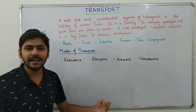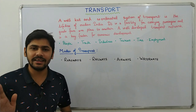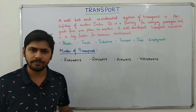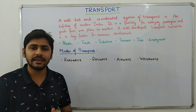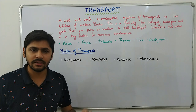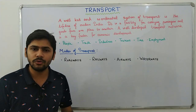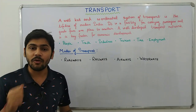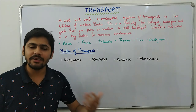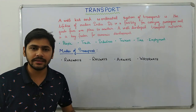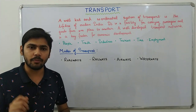Then industries. Industries require raw materials — transport brings those raw materials to the industries. Industries produce finished goods — transport moves those finished goods to our houses. Say you buy anything on e-commerce; it reaches your doorstep via a well-knit and well-coordinated system of transport. Then tourism — if you want to travel and tour a place, you will need means of transport, so for the tourism industry, transport is very very important.